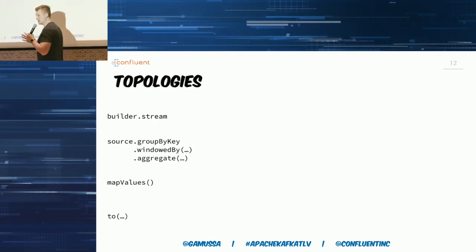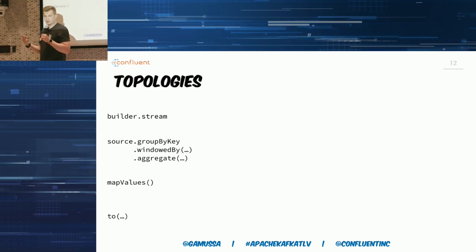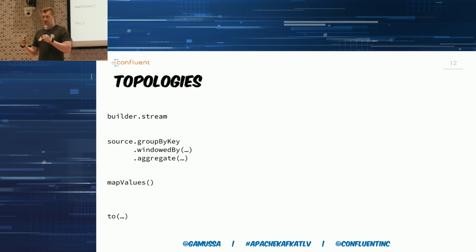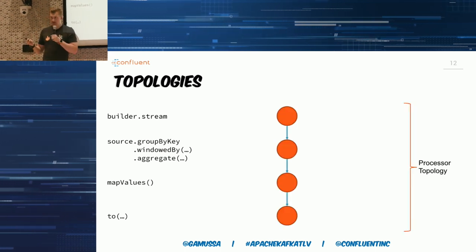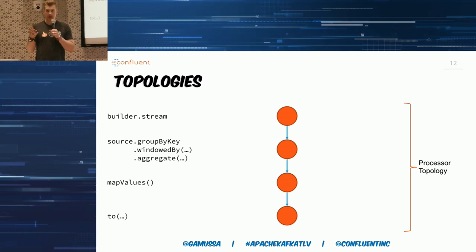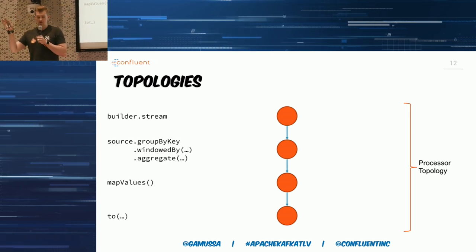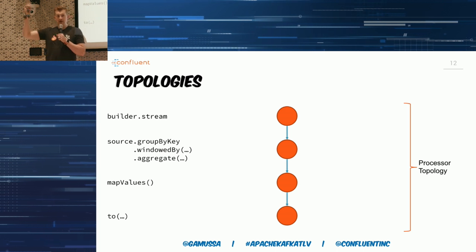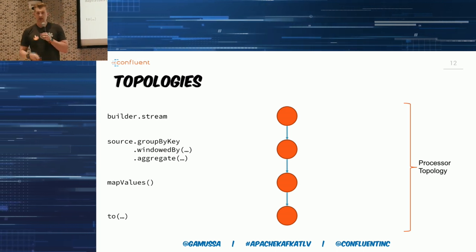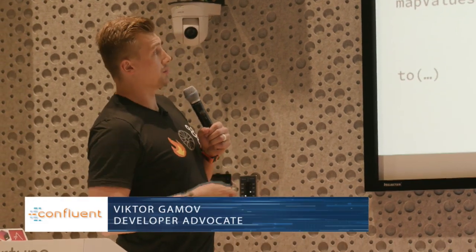What Kafka Streams does at runtime is it builds a directed acyclic graph — a topology that looks like a set of processor nodes. There are three types of nodes: source node, sync node, and processor node. Source and sync nodes define where we're getting data and where we're putting it. The processor node defines what we're doing with the data that comes from the previous step. In this case, we have a few processor nodes.